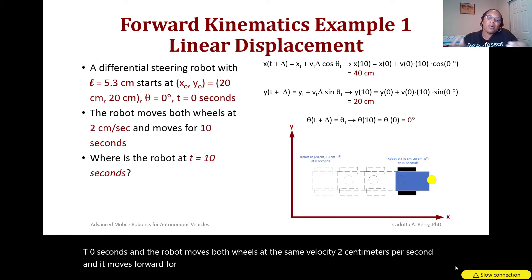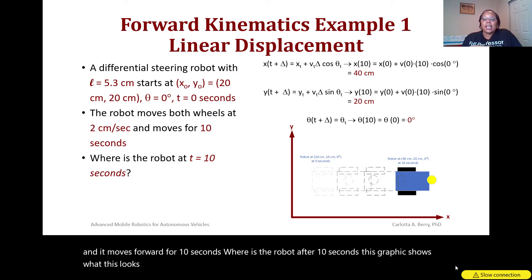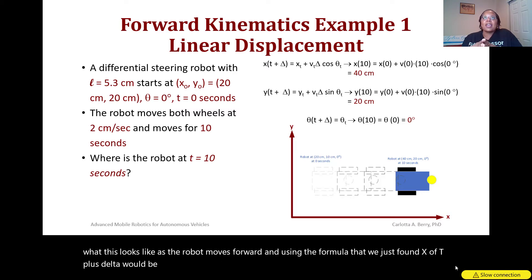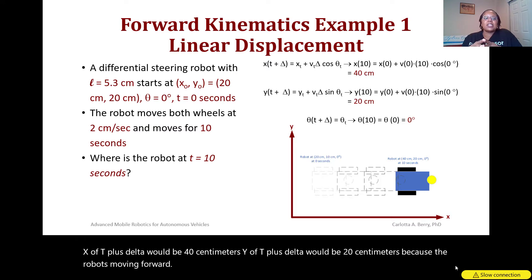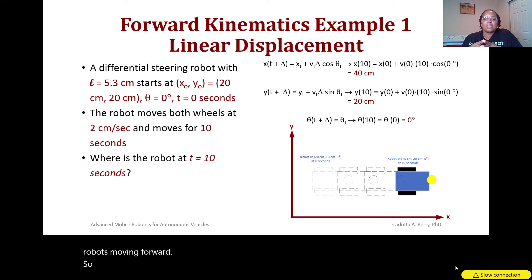This graphic shows what the motion looks like as the robot moves forward. Using the formula, x(t+Δ) = 40 cm and y(t+Δ) = 20 cm because the robot is moving forward — so the robot ends up at (40 cm, 20 cm) after 10 seconds with the angle still at zero degrees.